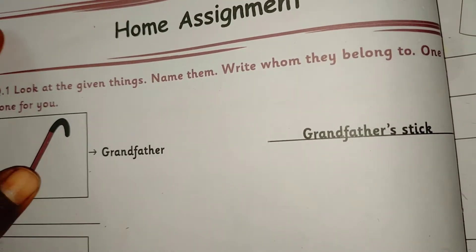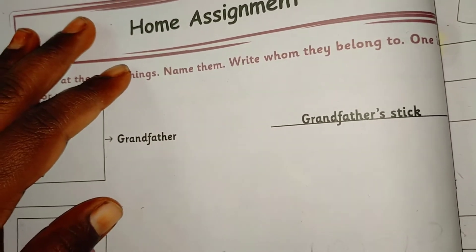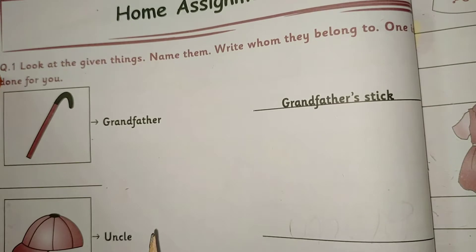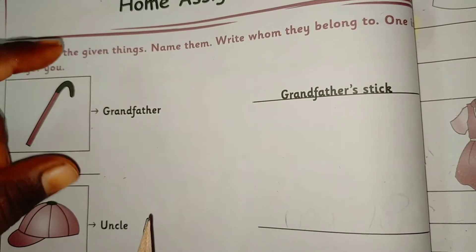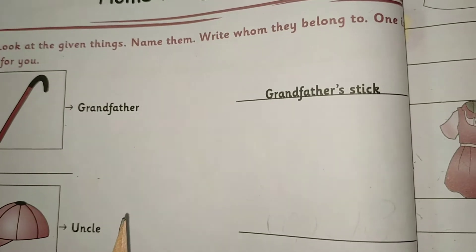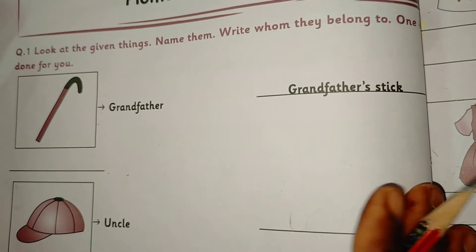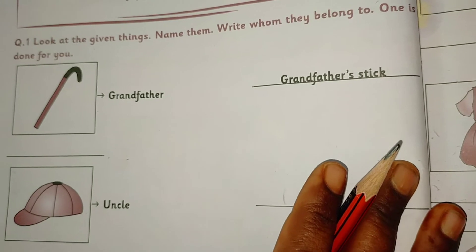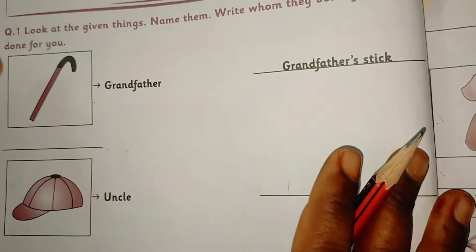Hello my dear students, today we are going to see home assignment Question 1. Look at the given things, name them, and write whom they belong to. One is done for you. Look at the given things.